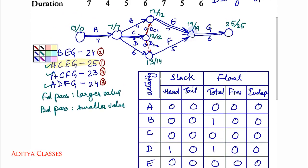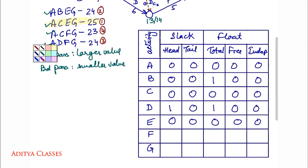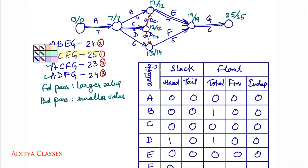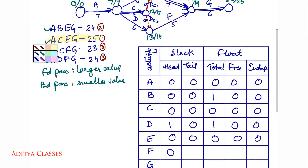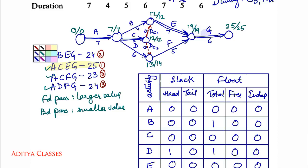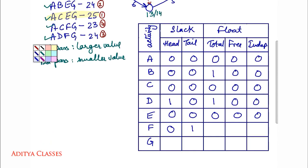For activity F: head slack is 19 minus 19 equals 0; tail slack is 14 minus 13 equals 1. Total float: 19 minus 13 minus 5 equals 1. Free float is total minus head: 1 minus 0 equals 1. Independent float is free minus tail: 1 minus 1 equals 0.